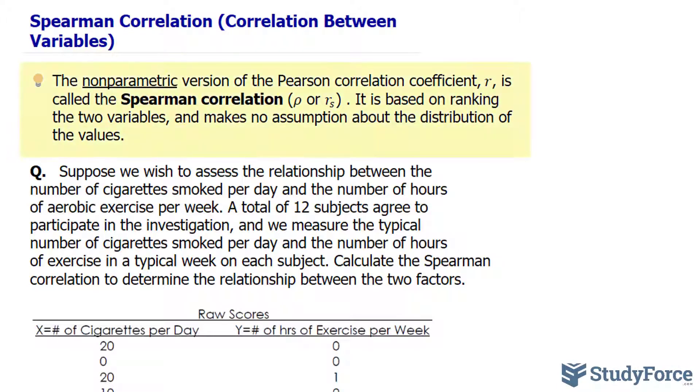The Spearman Correlation Coefficient is the nonparametric version of the Pearson Correlation Coefficient, R. And remember, that tells us the type of linear relationship that exists between two variables, whether it is positive, negative, weak, strong, and so on.